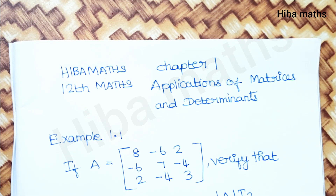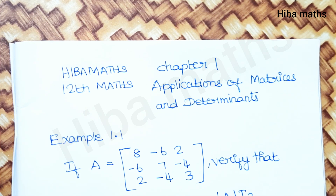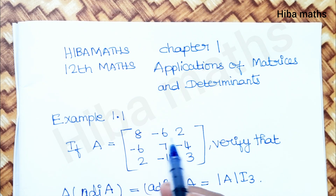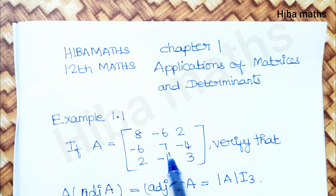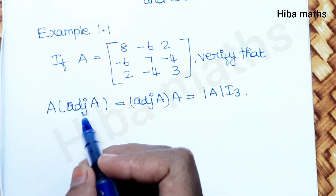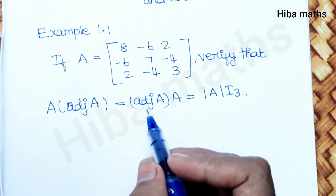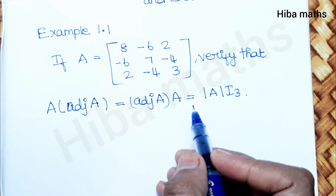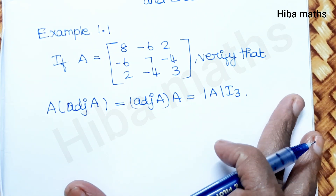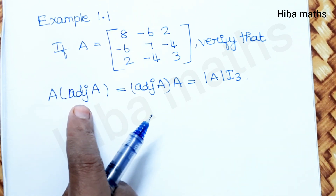Hello students, welcome to Class 12 standard, Chapter 1: Applications of Matrices and Determinants, Example 1.1. We need to solve: if A is equal to the matrix [8, -6, 2; -6, 7, -4; 2, -4, 3], verify that A into adjoint of A is equal to adjoint of A into A, is equal to modulus of A into I₃.